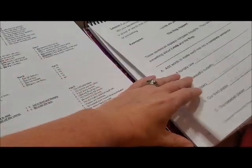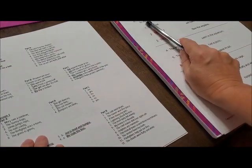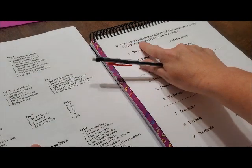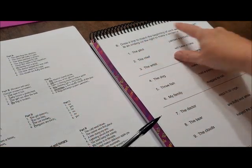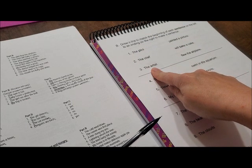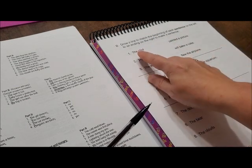Alright. So, now we're going to turn our paper over. Alright. And, now it says, draw a line to match the beginning of each sentence on the left to the ending on the right. Alright. So, it says.